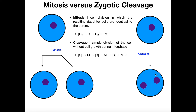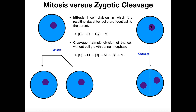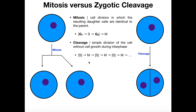Do these daughter cells have the same DNA? Yes — we still have the S phase during interphase in cleavage, so the DNA in the parent cell is replicated and then equally apportioned between the two daughter cells. However, the size of these cells is roughly half that of the original, because there are no G1 or G2 growth phases in cleavage. There are mechanisms inside the zygote and resulting daughter cells that allow interphase to bypass G1 and G2.